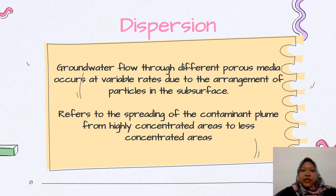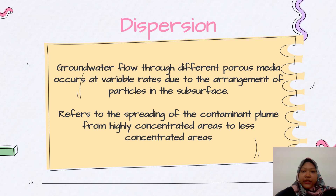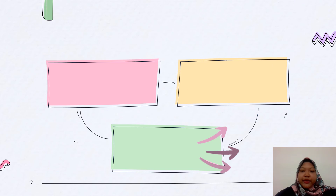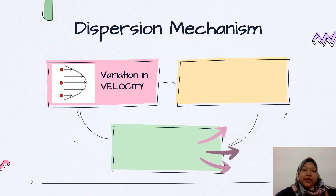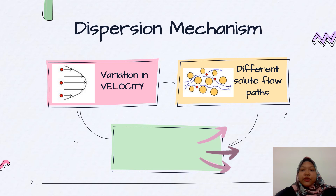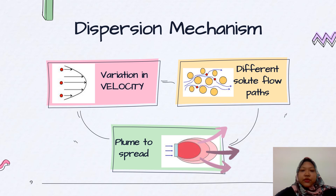Dispersion is when groundwater flows through different porous media at varied rates due to the arrangement of particles in the subsurface. It refers to the spreading of the contaminant plume from a highly concentrated area to a less concentrated area. The dispersion mechanism is helped by variations in velocity and different solute flow paths, and it can cause the plume to spread away.